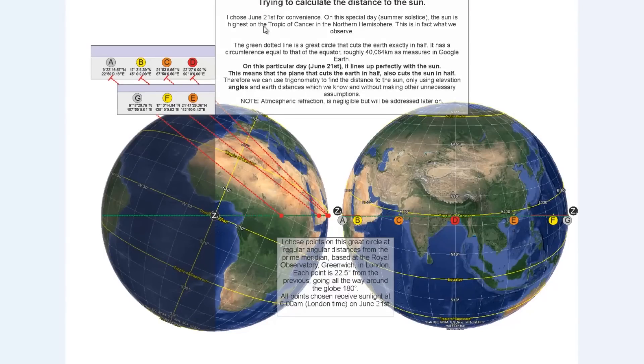Trying to calculate the distance to the Sun, I chose June 21st for convenience. On this special day, the summer solstice, the Sun is highest on the Tropic of Cancer in the Northern Hemisphere. This is in fact what we observe. The green dotted line is a great circle that cuts the Earth exactly in half. It's on the ecliptic plane. And on this particular day, June 21st, the line aligns perfectly with the Sun. This means that the plane that cuts the Earth in half also cuts the Sun in half. Therefore, we can use trigonometry to find the distance to the Sun, using only elevation angles and Earth distances which we know, without making any further assumptions.